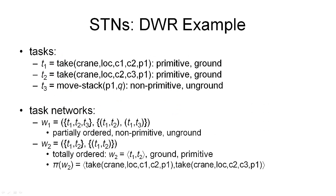To make sure you understood all this correctly, here are a few examples from our DocWorker robot domain. The first task is T1, described by taking with the crane at a location, container one from container two in pile one. This task is primitive because we have an operator with the same name, namely take. And this task is ground because all the arguments given to it are objects and not variables. Similarly, we have task T2 with the same task symbol take, taking with the crane at the same location, container two from container three in pile one. T2 is also primitive and ground for the same reasons.